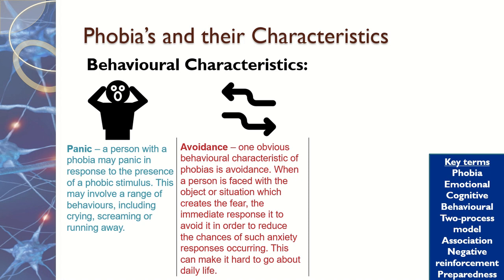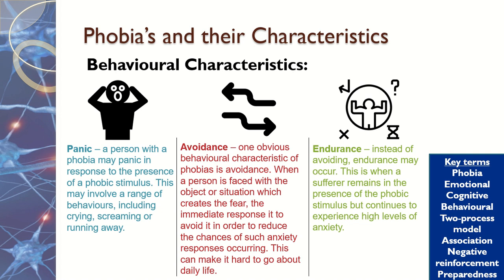The second behavioural characteristic is avoidance — we completely avoid the situation if possible. For example, with a social phobia, we might avoid the situation altogether by not turning up to school, work, or social occasions. Finally, there is endurance: instead of avoiding it, the sufferer remains in the presence of the phobic stimulus but continues to experience extremely high levels of anxiety. For example, if you're scared of dogs and one runs up to you, you might be unable to move away and just suffer through it by staying completely still.